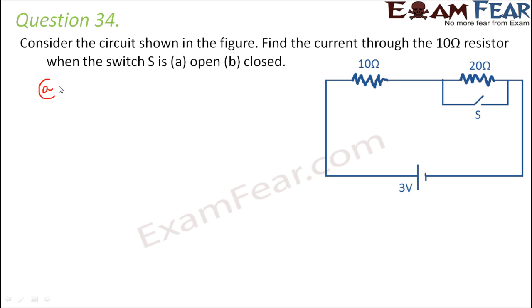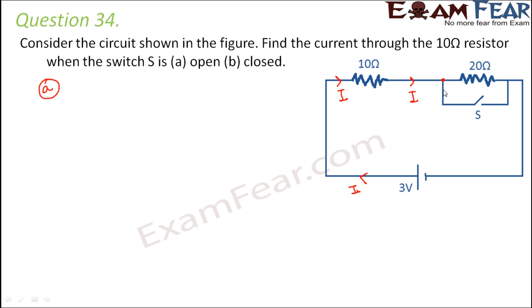First let us look at the scenario when the switch is open. When the switch is open, this circuit is not complete, so there would be no current flowing through that part because the circuit is broken. The flow of current would be such that the entire current flows through the other path and comes back, so there will be no flow of current along the broken part.